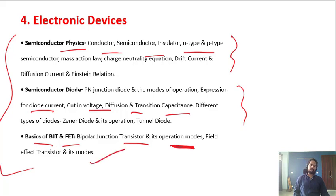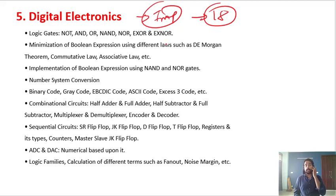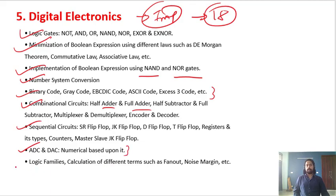Next is Digital Electronics. This is also important. I have seen around 18 questions from Digital Electronics in the 2018 paper. Topics include logic gates, minimization of Boolean expression, implementation of Boolean expression using NAND and NOR gates, number system conversion, binary code, gray code, and different types of codes. Then combinational circuits: half adder, full adder, half subtractor, full subtractor, multiplexer, demultiplexer, encoder, decoder. Sequential circuits: SR flip-flop, all types of flip-flops, and counters. Next is ADC and DAC (analog to digital converter and digital to analog converter) and numerical based upon it. Last is logic families.